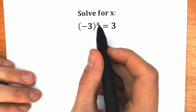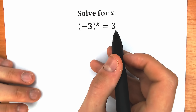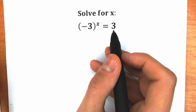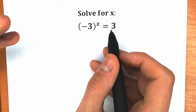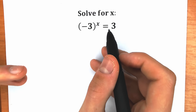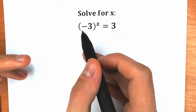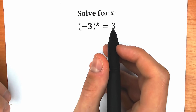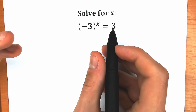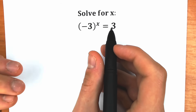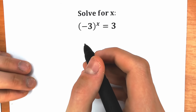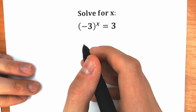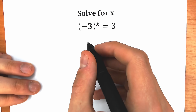The equation is: minus 3 to the x equals 3. A lot of students may say, hey mister, there is no way we have real number roots here because that's not possible.